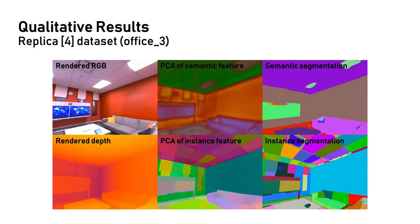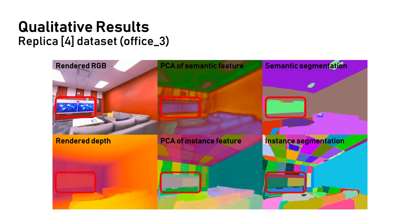Here we show the visualized results of a replica scene. Our method can segment instances consistently in 3D based on 2D training views. Take the TV screen for example, the semantic and instance features are multi-view consistent.